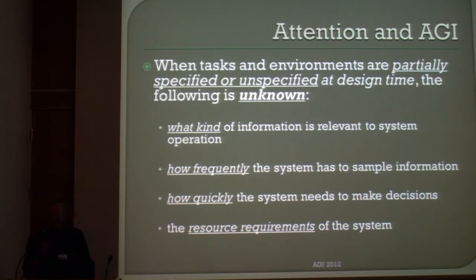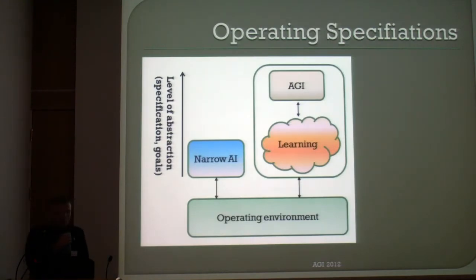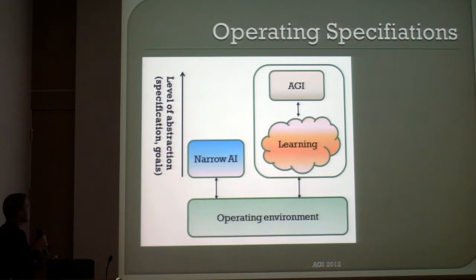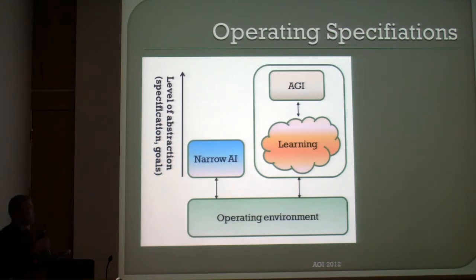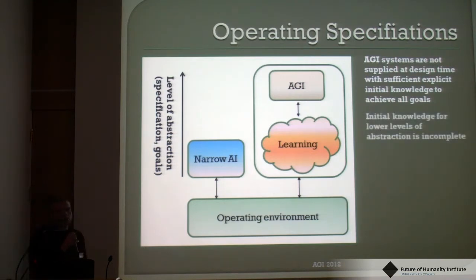With AGI, we usually have partially specified or even unspecified tasks and environments. We don't know — at least not fully — what information will be relevant, how quickly the system must sample the environment, how quickly it must make decisions, or what resource requirements will be. Narrow AI systems are specified all the way down to perception and action, whereas AGI systems are given high-level goals without specifying how to achieve them down to action and perception, and their initial knowledge at lower levels of abstraction will usually be incomplete.